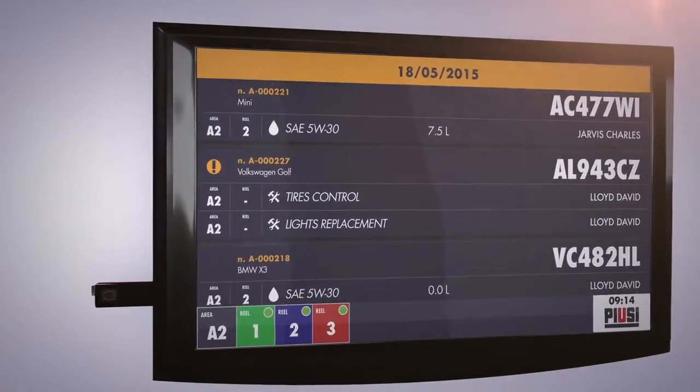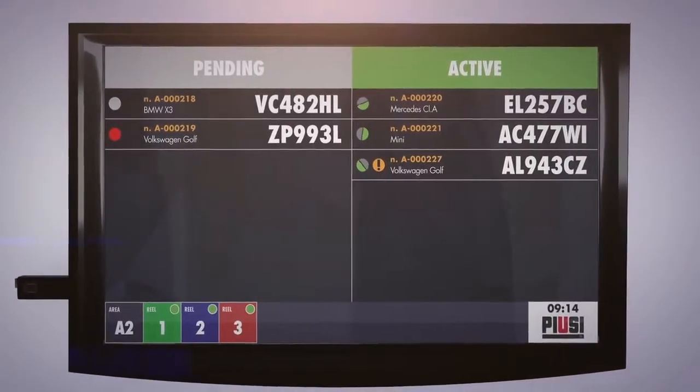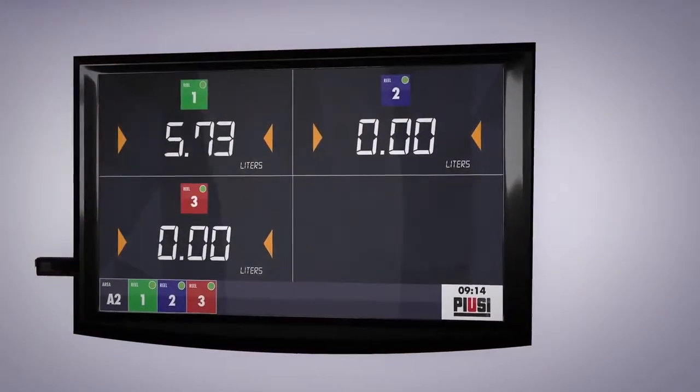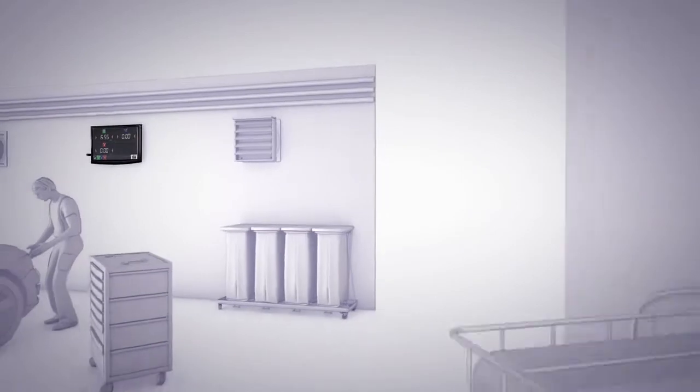When connected to a TV monitor, this device shows a complete overview of the activities. All operators can see the work that needs to be carried out, the cars that are being worked on, the counting of fluids delivered and even whether an oil tank is running low.